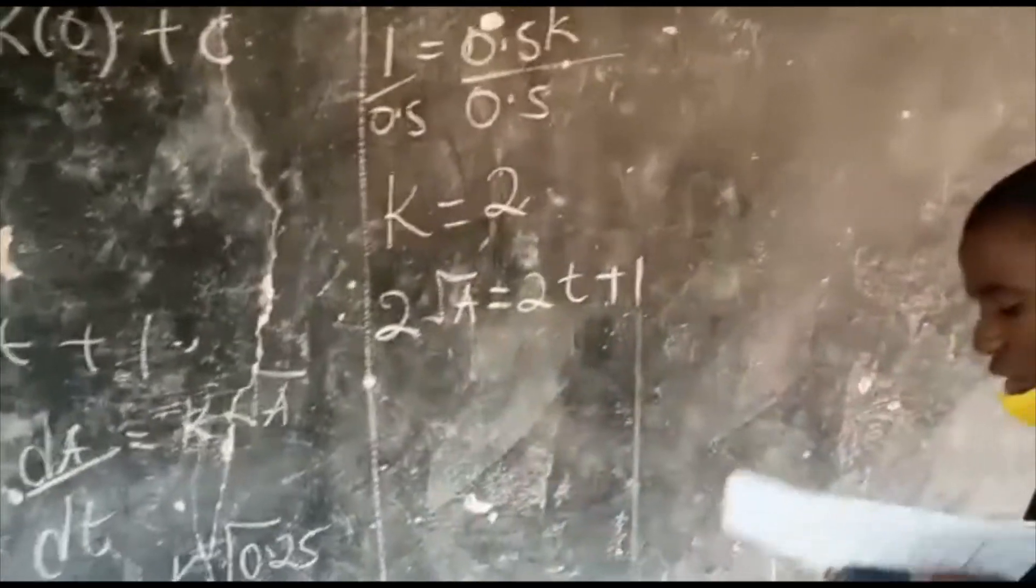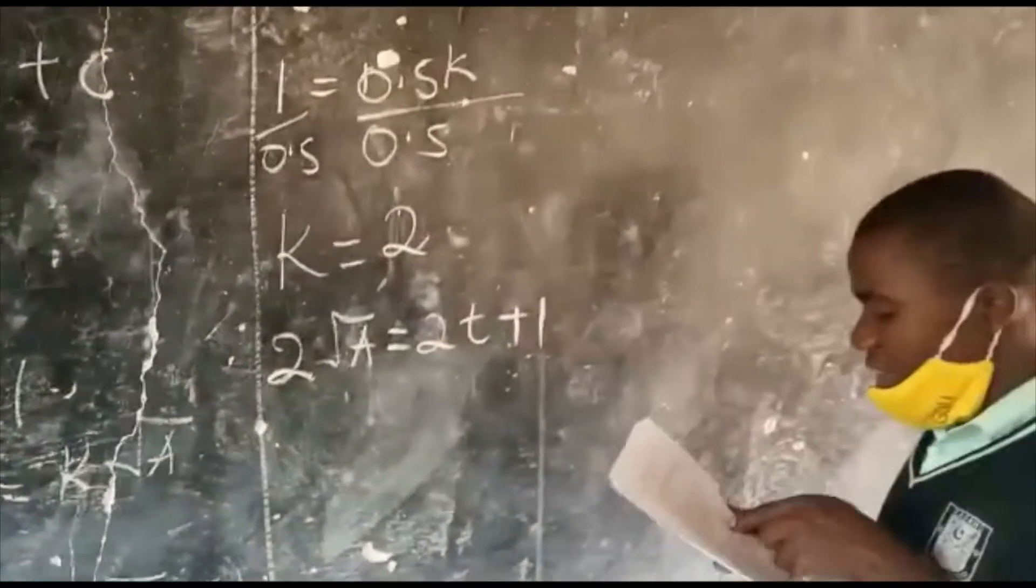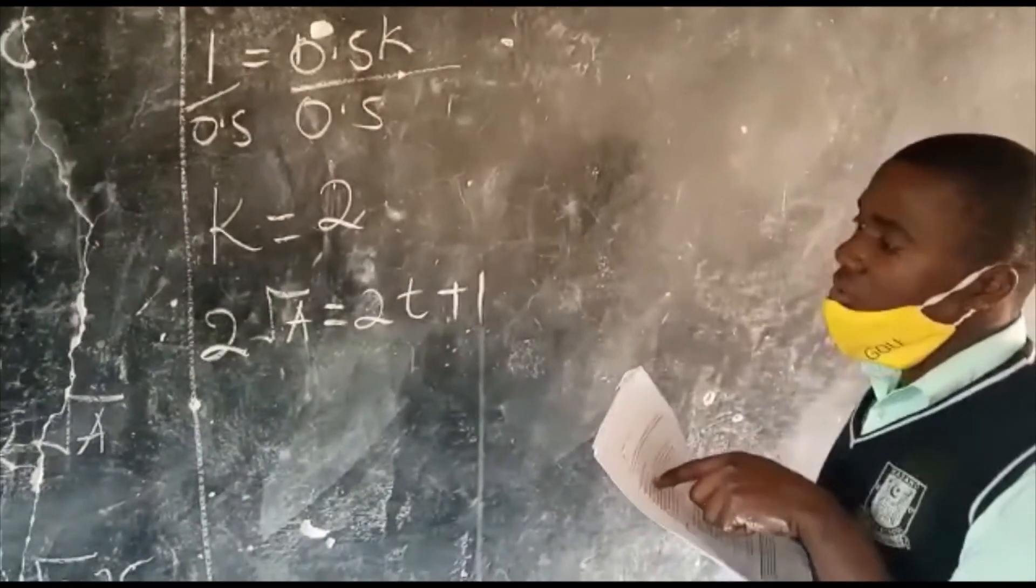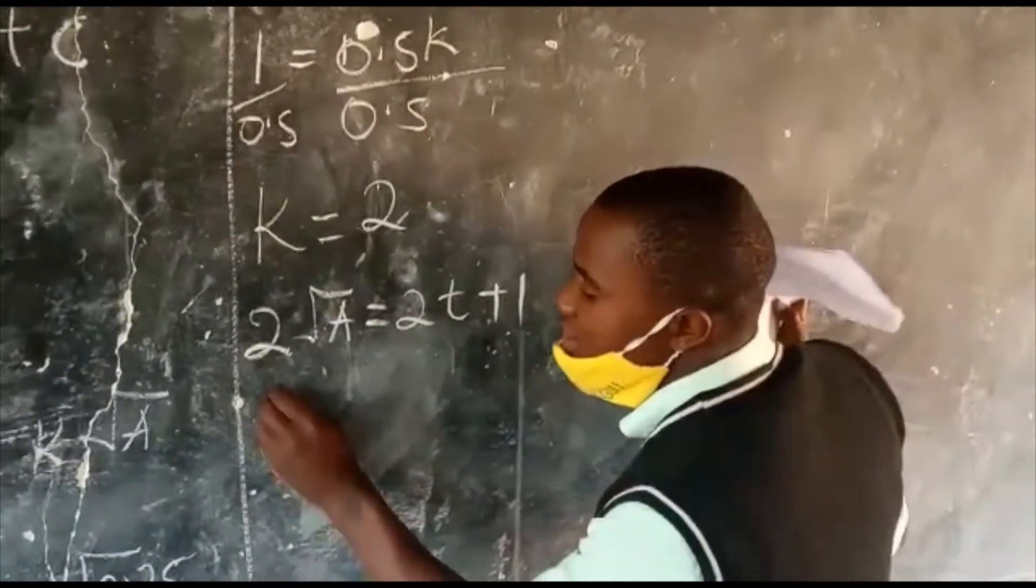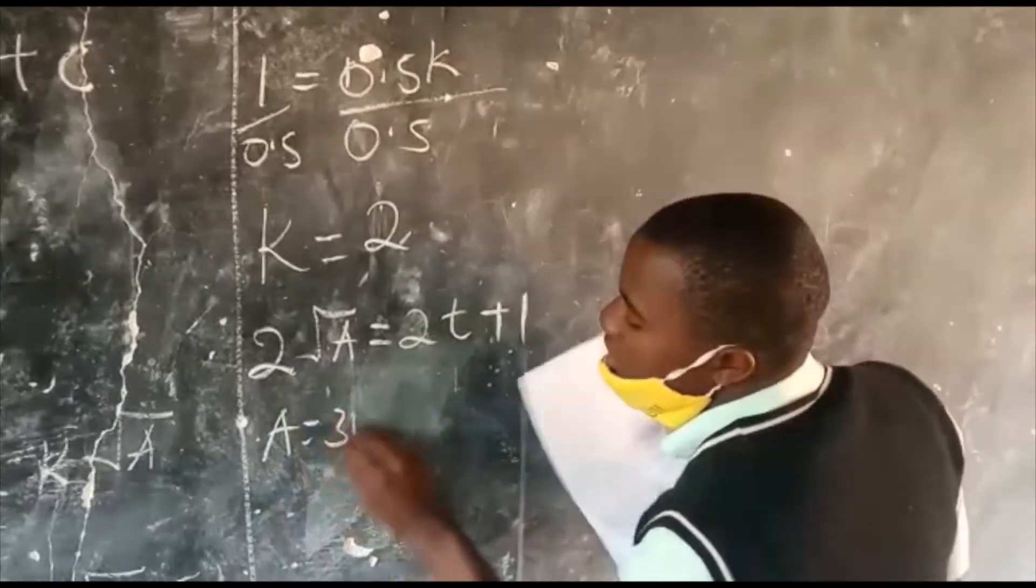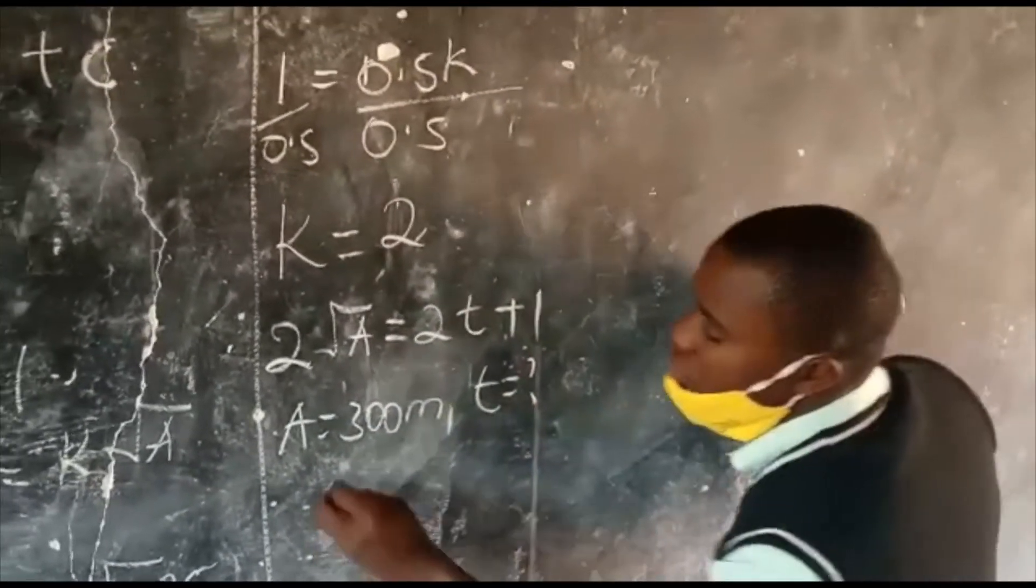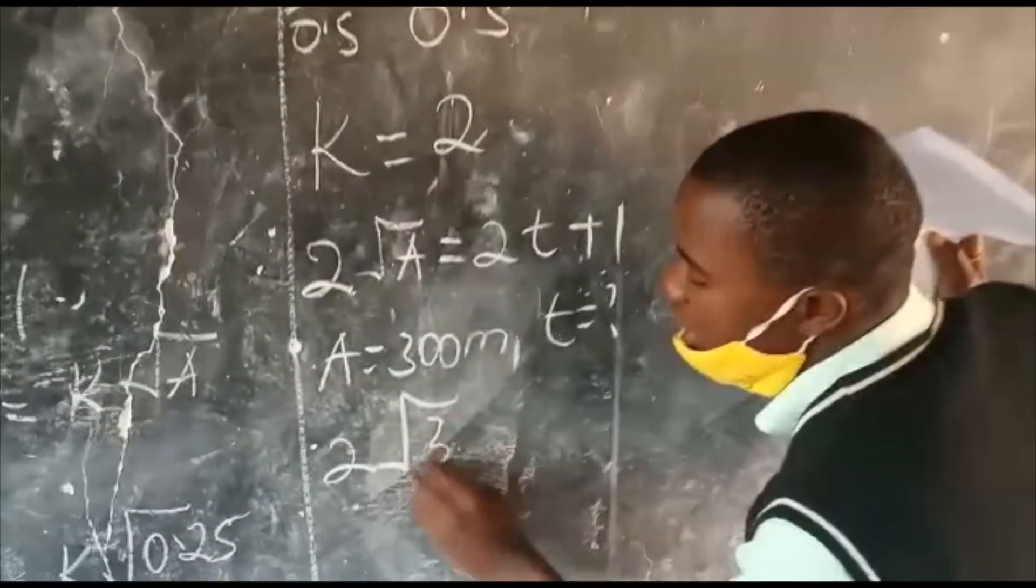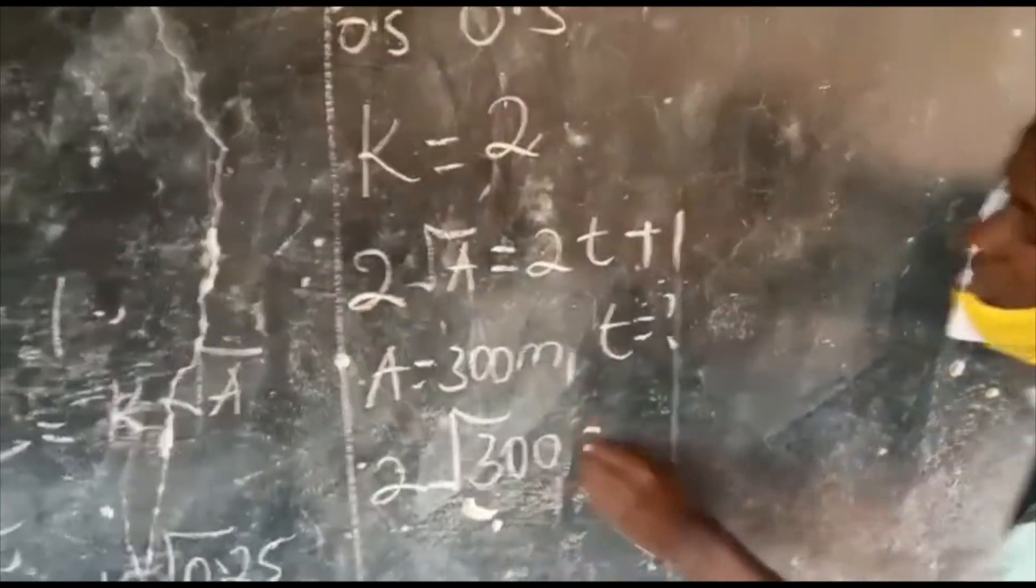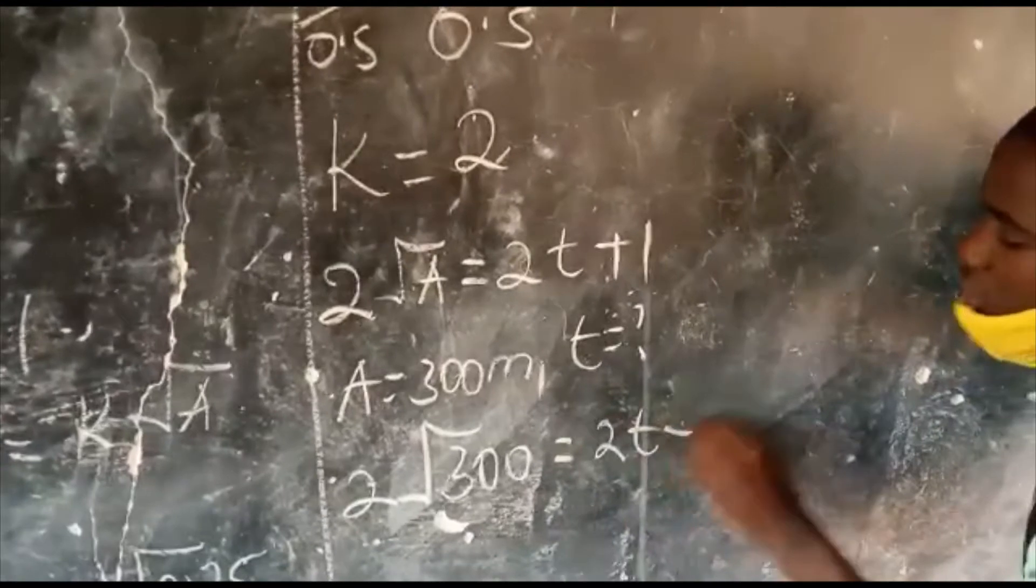Since I am looking for the time, and the pond covers an area of 300 meters squared, when A is 300 meters squared, what is the value for T I am looking for? So, 2 root of the area, which is 300, equals to 2T I am looking for, plus 1.